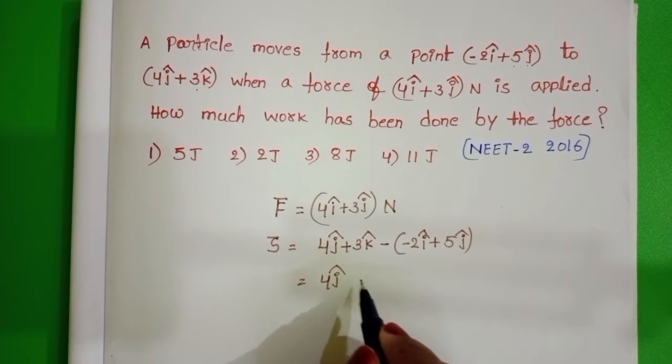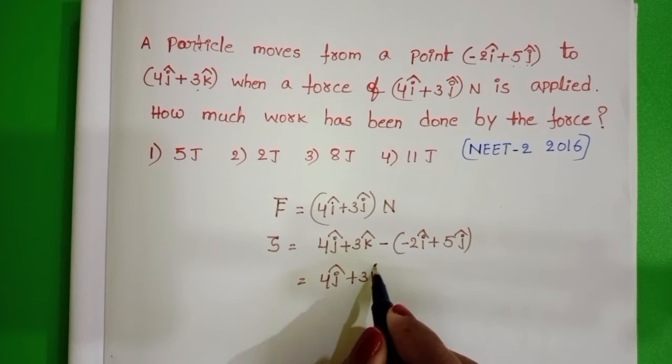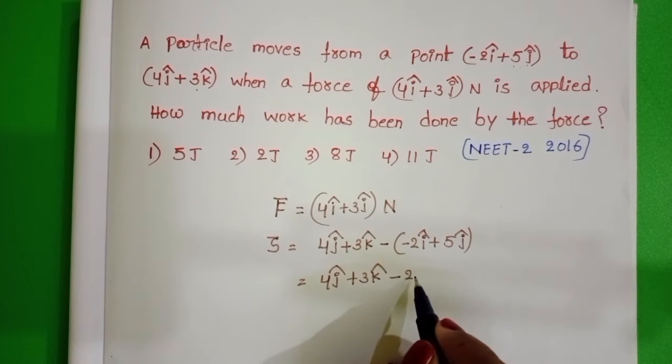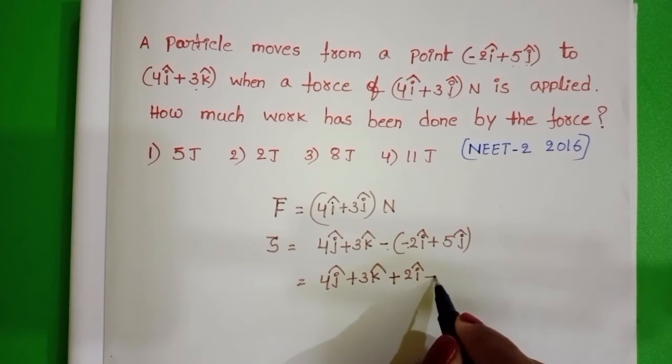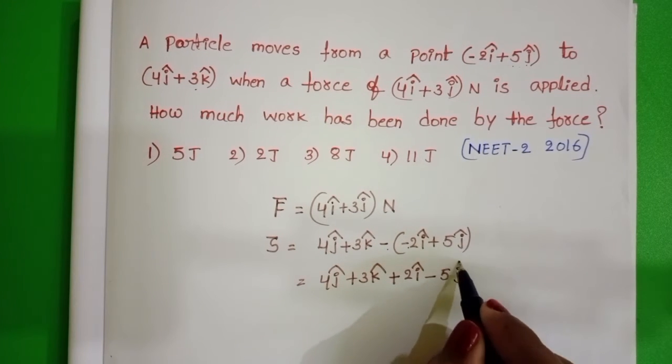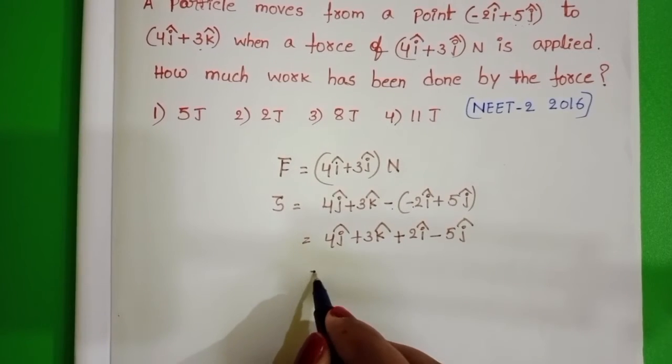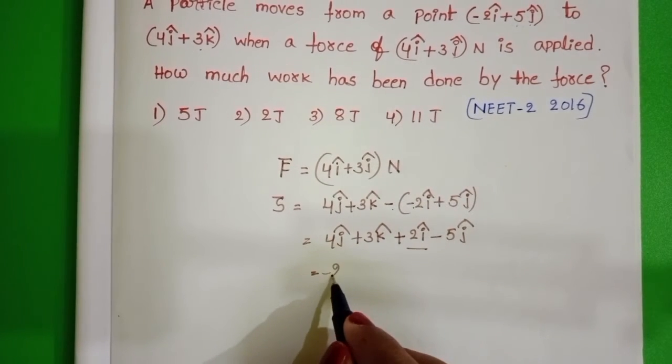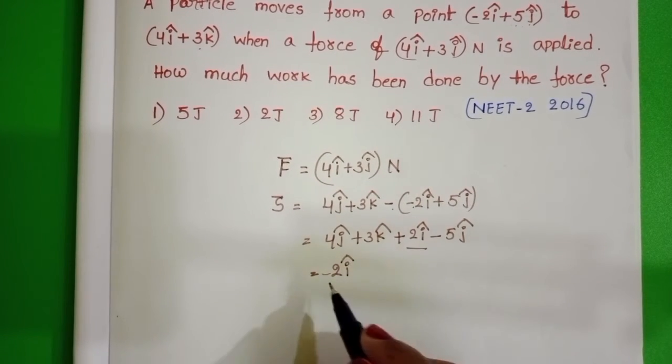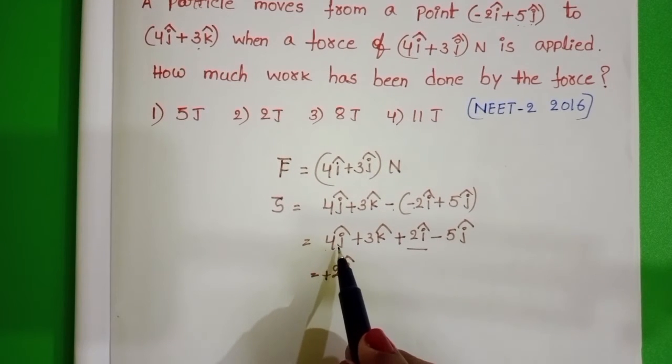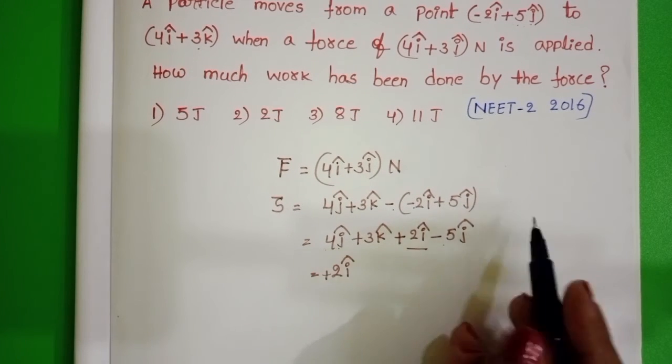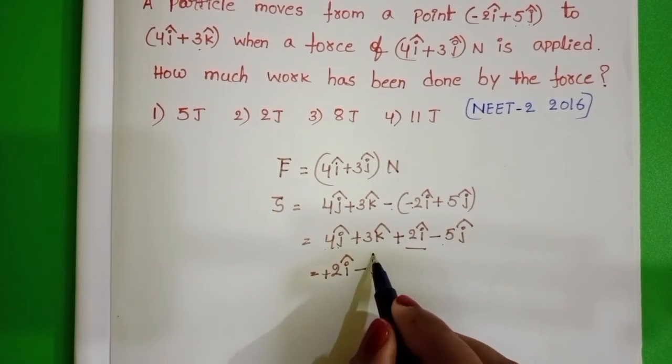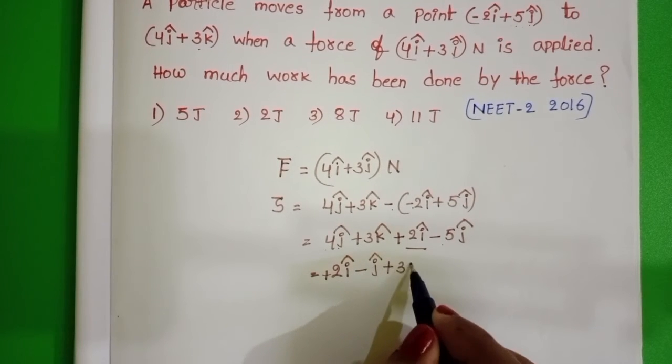4ĵ + 3k̂, multiply with minus. Minus into minus plus 2î, minus into plus minus 5ĵ. 2î + 4ĵ - 5ĵ. It becomes -ĵ + 3k̂.